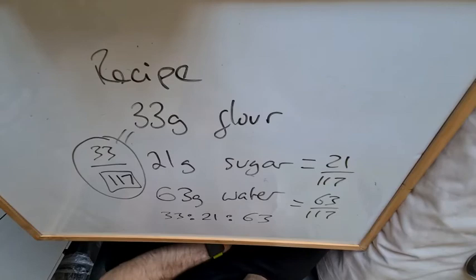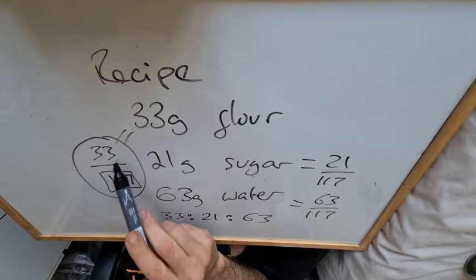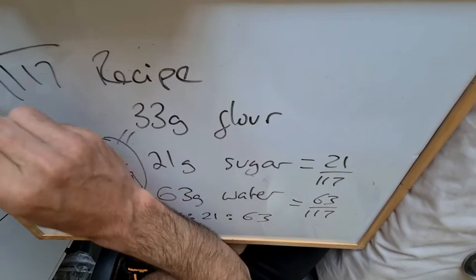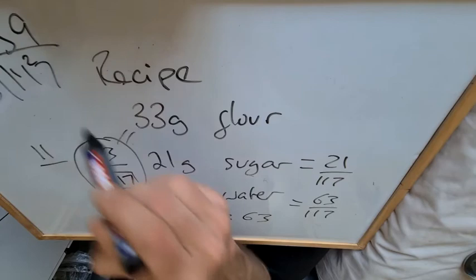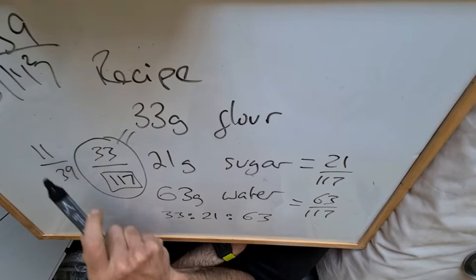So that gives me 11 over, and I might want to work that out in bus stop, 117 divided by three. Excuse me, I beg your pardon, it is 39. So that's 11 over 39. 11 is prime and 11 doesn't go into 39, so we can, we know that's fully simplified.